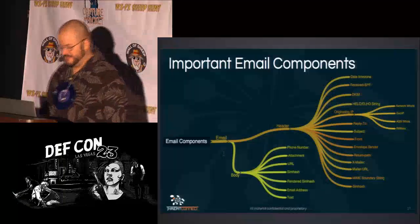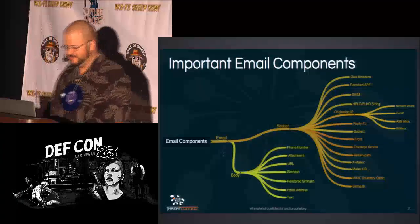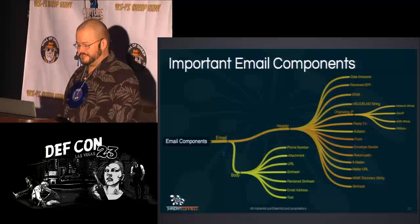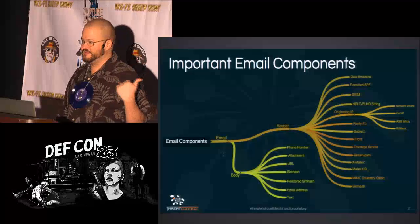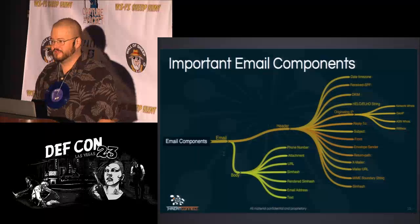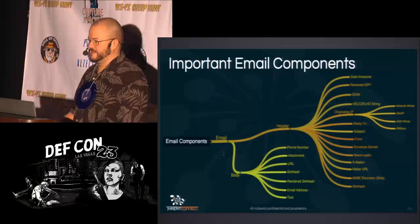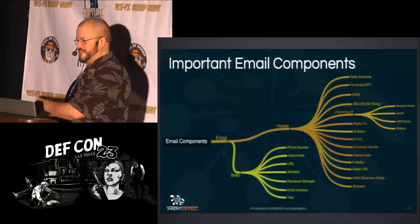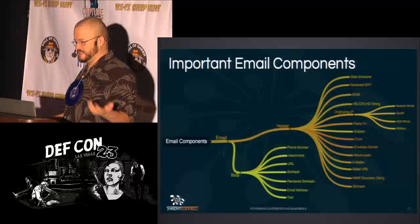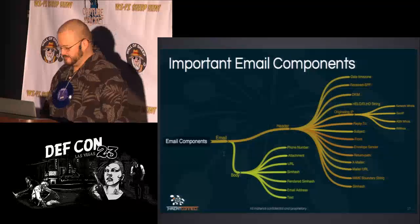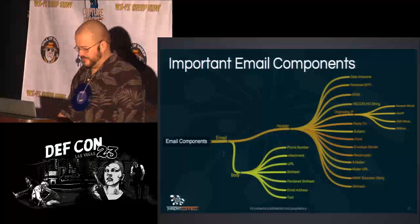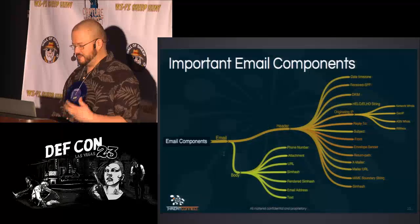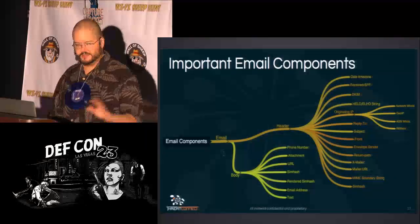Also do simhashes of the body components — take a simhash of the HTML and the text separately. Some email clients only generate HTML emails with no text. For a rendered simhash, use something like BeautifulSoup or another HTML parser to remove all HTML tags, leaving just the text, then take a simhash of that. You can also extract email addresses and keep the raw text itself. Those are the things you can collect from the body and header.